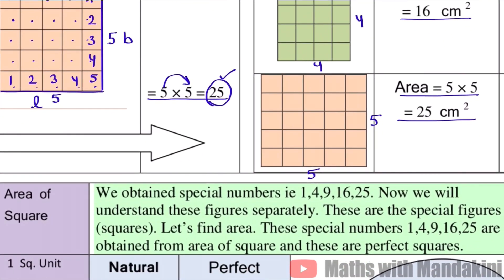So we obtained special numbers: 1, 4, 9, 16, 25. Now we will understand these figures separately. These are the special figures, and these numbers which we get from area, these are perfect squares.